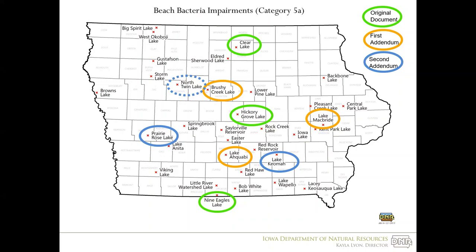The first addendum, or part two, of the Statewide Beach Bacteria TMDL also included three lakes: Brushy Creek Lake, Lake McBride, and Lake Aquabi, which are circled in orange. Part two was submitted and approved by EPA in 2022, and a link to the part two document and video presentation will also be provided below.